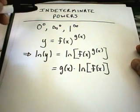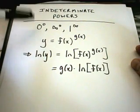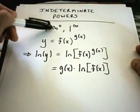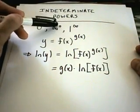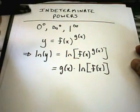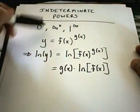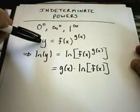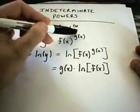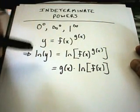The last case for L'Hopital's rule is what are known as indeterminate powers. The idea is you're getting a limit of the form 0 to the 0, infinity to the 0, or 1 to the infinity. And so if we have something raised to a power, our original thing that we're taking the limit of, you can think about that as being a function raised to some other function.